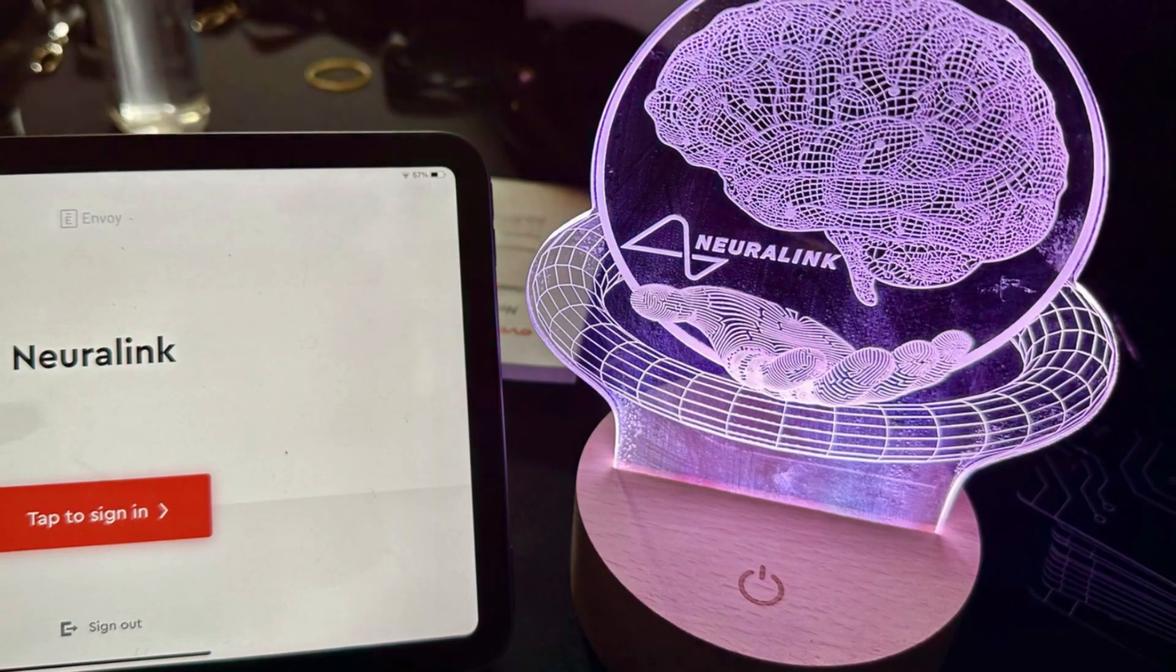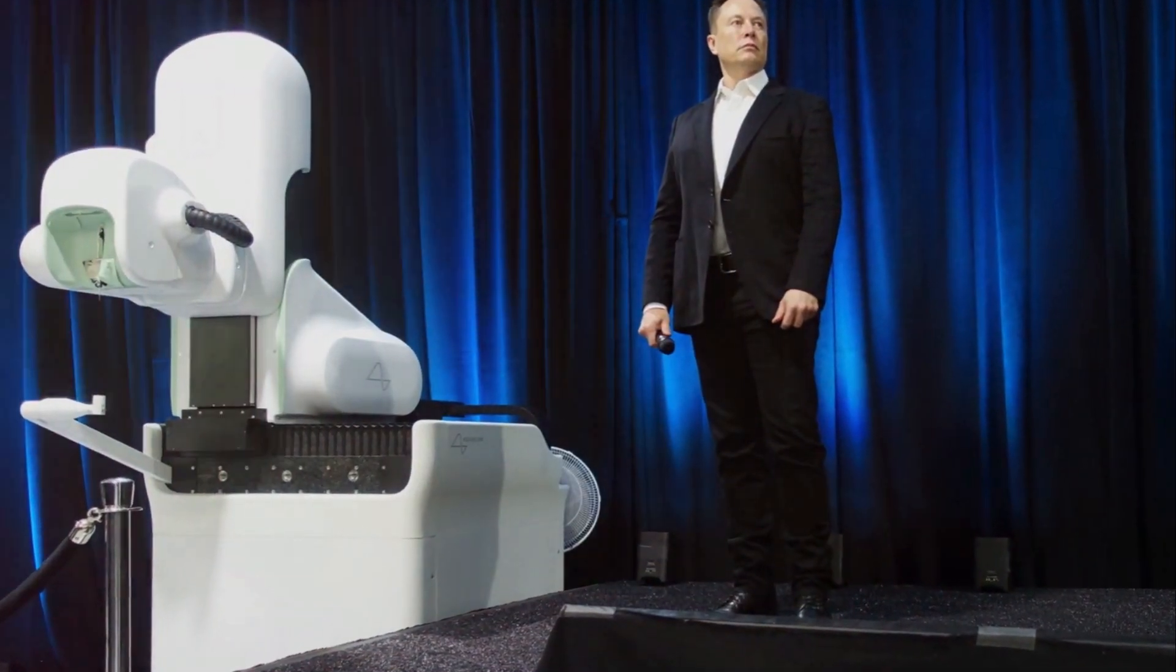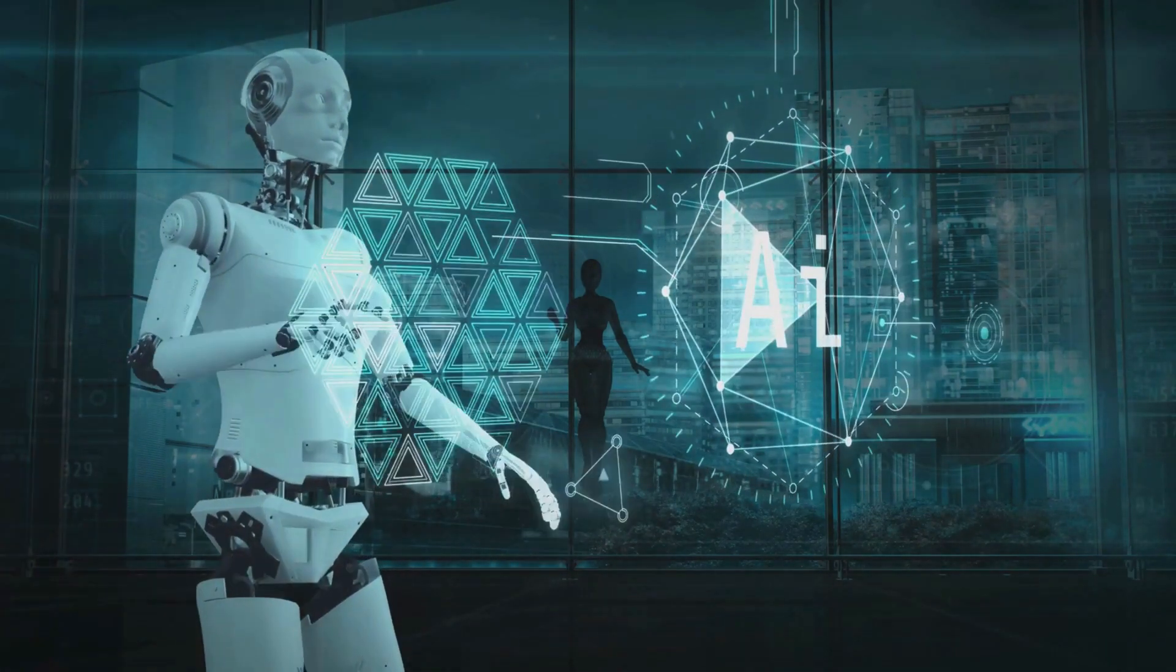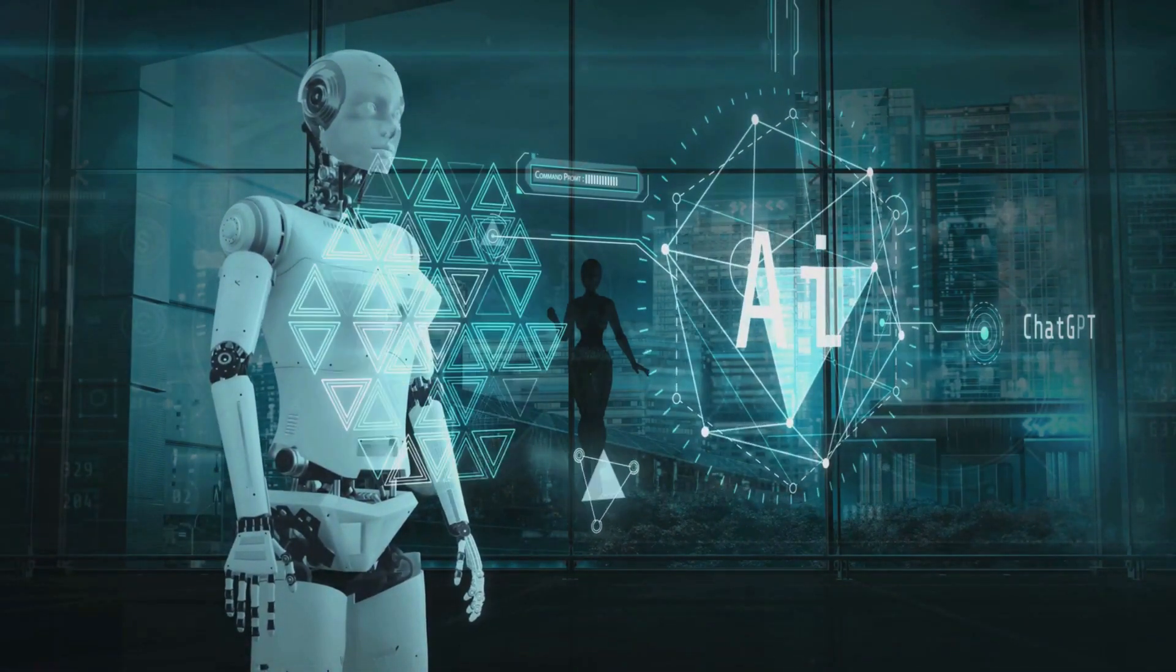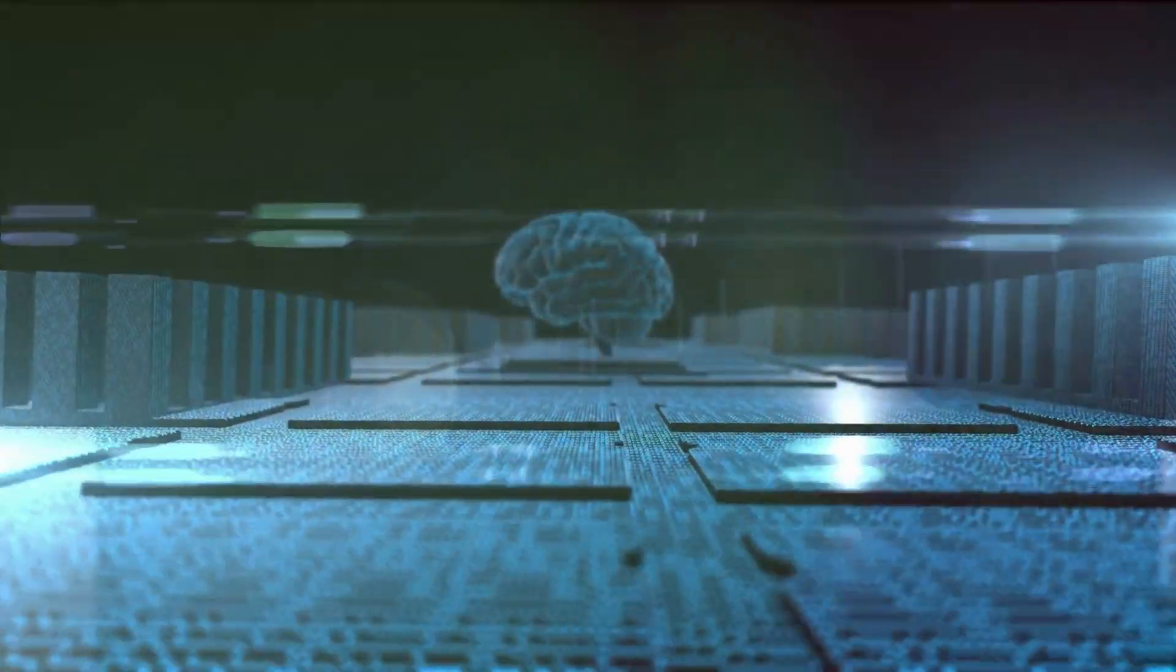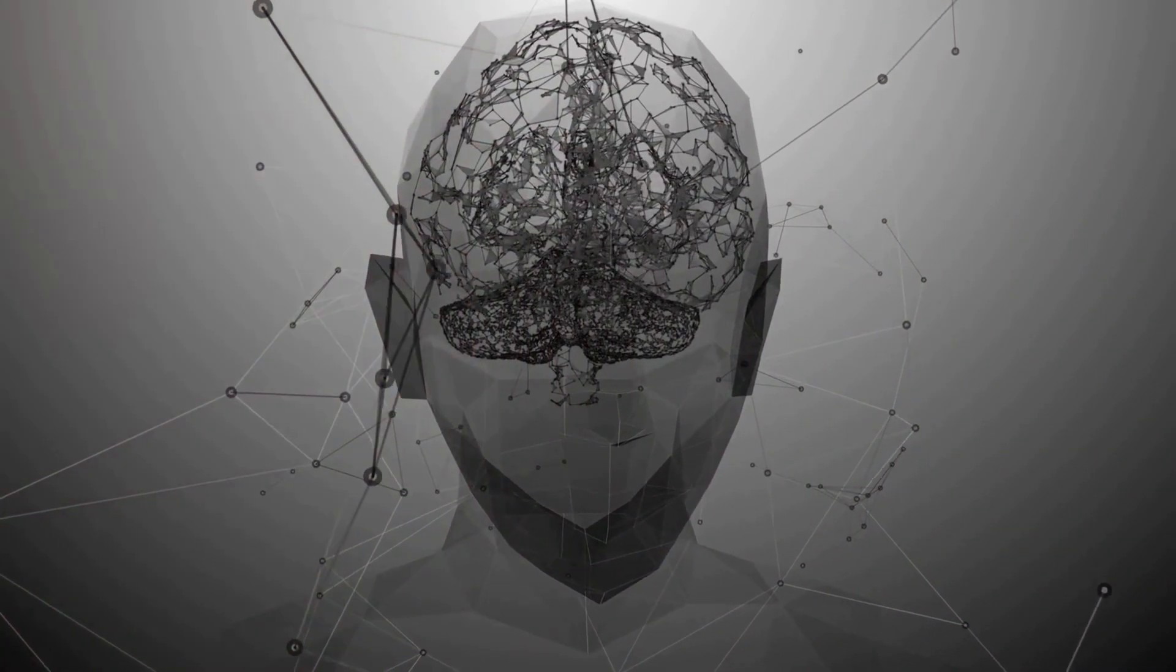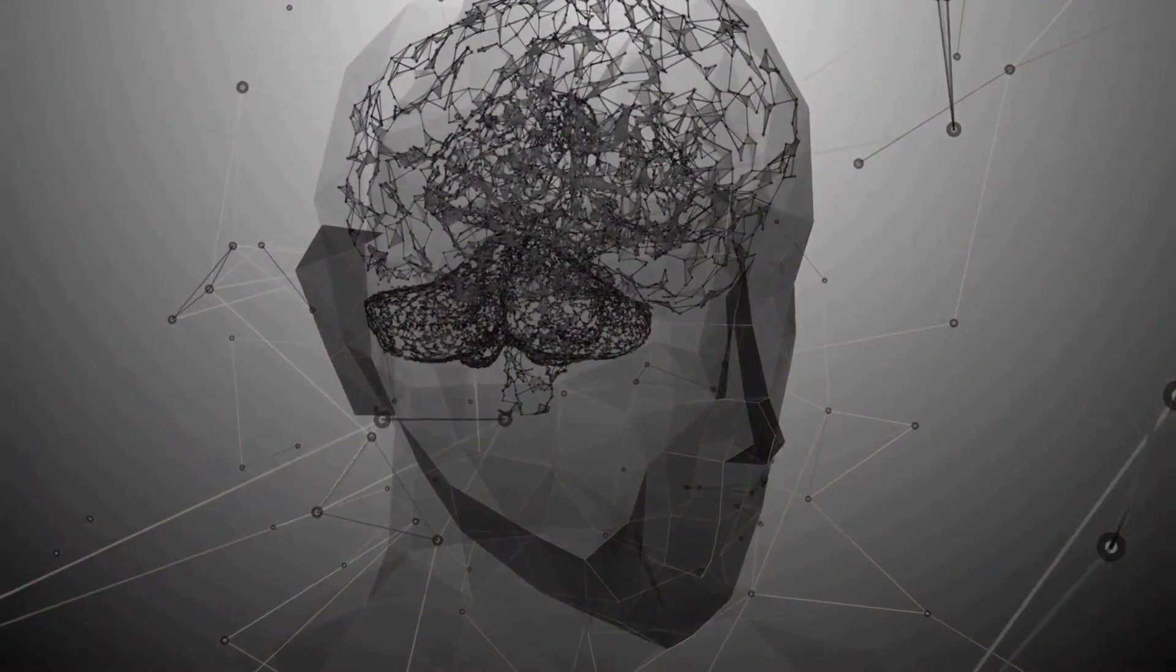One such company at the forefront of this revolution is Neuralink. Founded by Elon Musk, Neuralink is pioneering the development of ultra-high-bandwidth brain-machine interfaces. These devices aim to connect humans and AI in a way that could transform our capabilities and redefine what it means to be human. Imagine being able to download knowledge directly into your brain or communicate without speaking a word. Imagine having access to AI-assisted decision-making, enhancing our cognitive abilities beyond our natural limits.